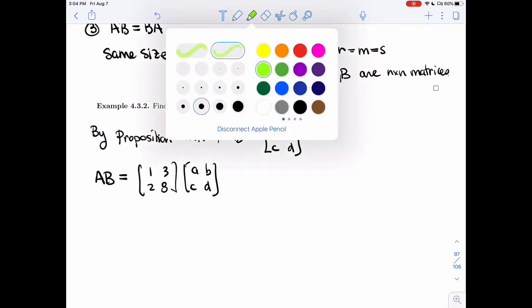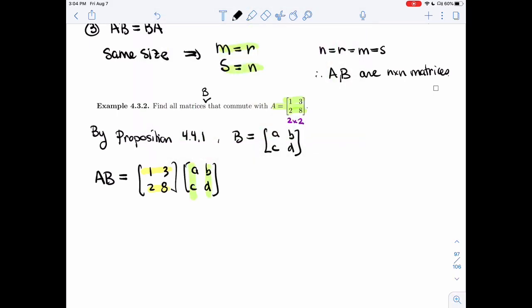So we'll be looking at the rows here and the columns here when we take the product. So the first one is A times 1 plus 3 times C, second entry is B plus 3D, then we have 2A plus 8C, and 2B plus 8D.